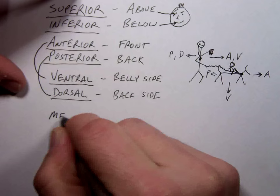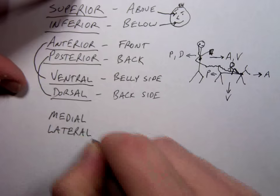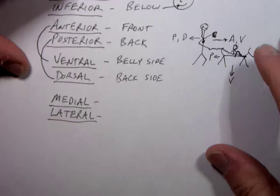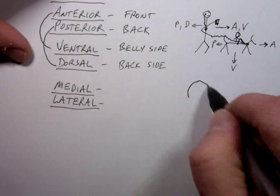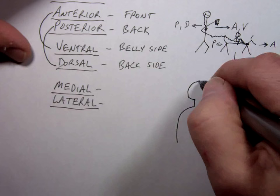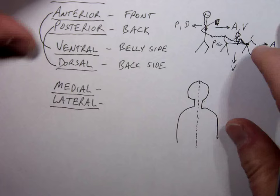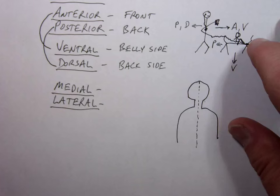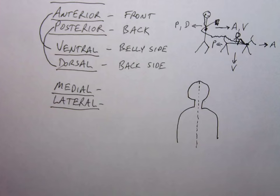How about this one? Medial and lateral. What these two mean is this. There is, in us, if we're looking at the front side of us here, there is an imaginary midline.